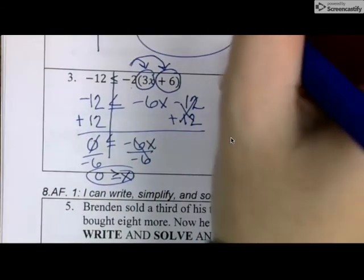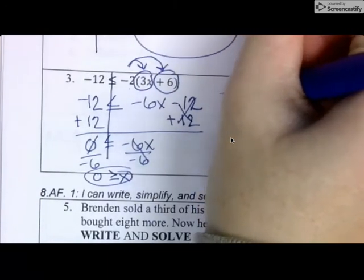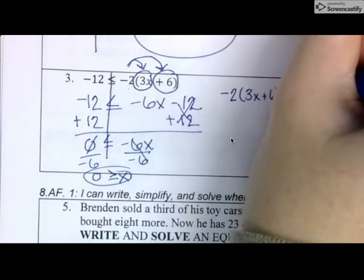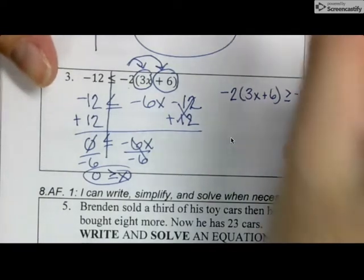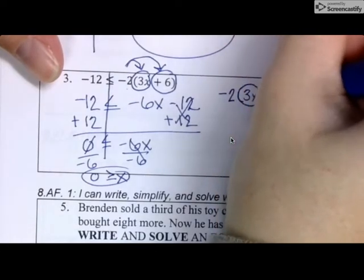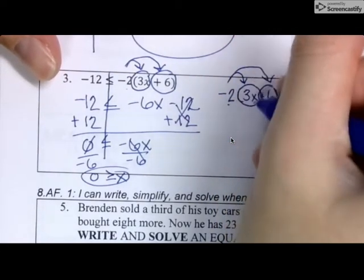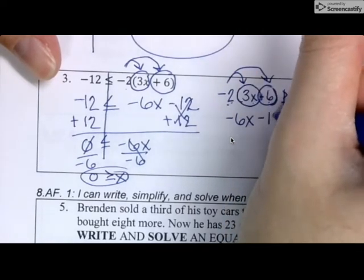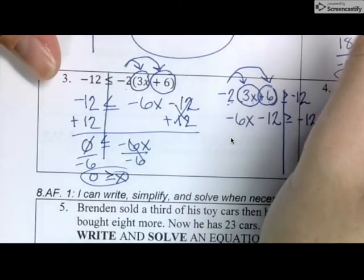If I were to flip this, I am not changing anything the way that the numbers look. The only thing that I'm going to fuss with is my sign. So I'm going to draw my line. Same thing that we just talked about. We are going to distribute here. Negative two times three X is negative six X. Negative two times positive six is negative 12. And then that's going to equal negative 12 on the other side.